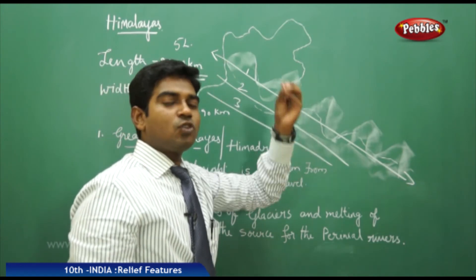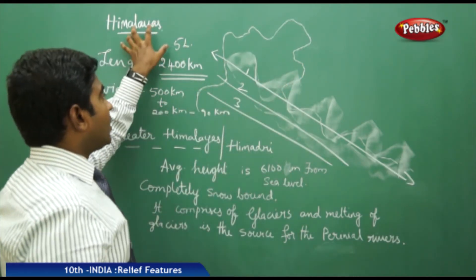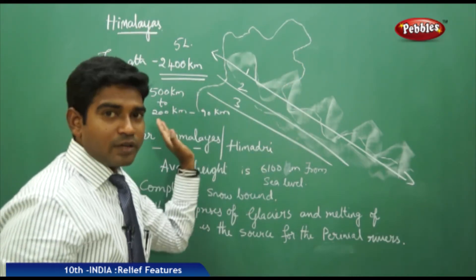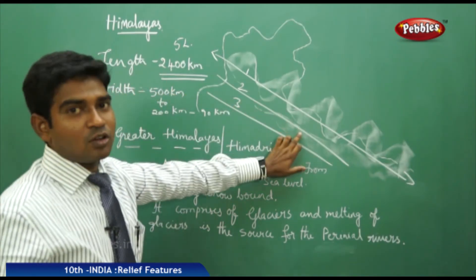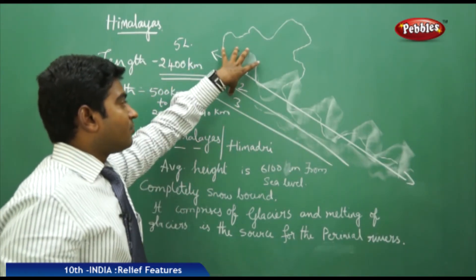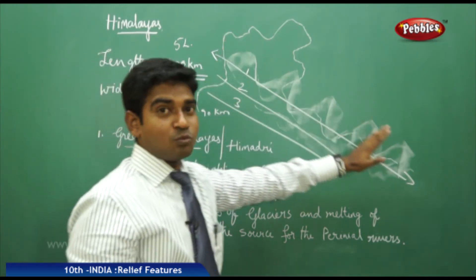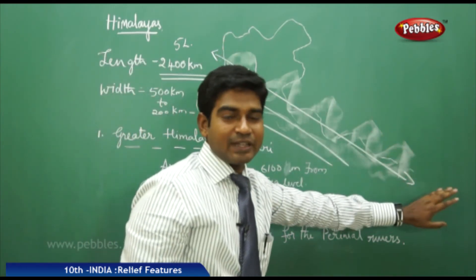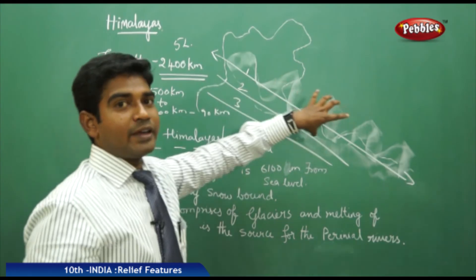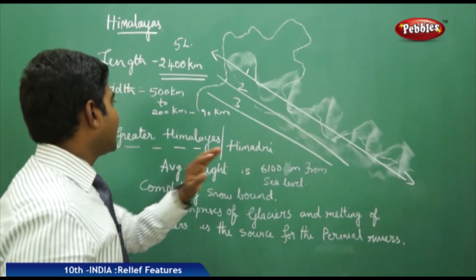To summarize: the Himalayan length is 2,400 kilometers. The width ranges from 500 kilometers in the Jammu and Kashmir region, reducing to 90 kilometers in the Arunachal Pradesh region, with values of 300 and 200 kilometers in between, varying across different areas.